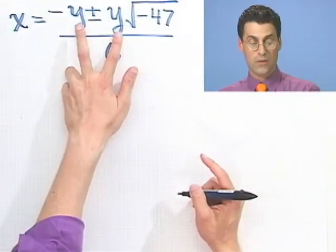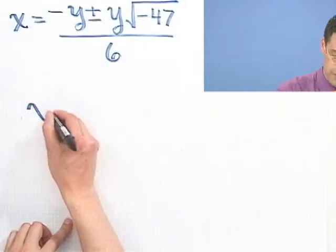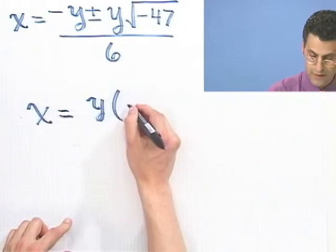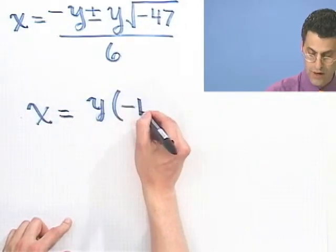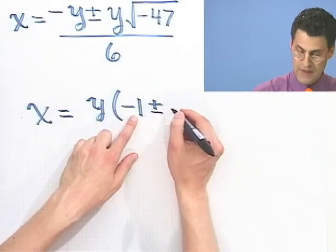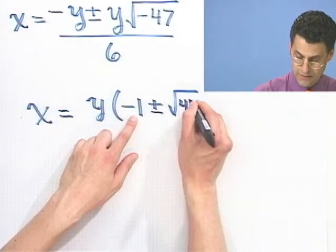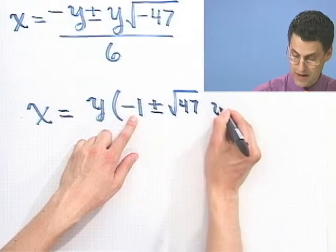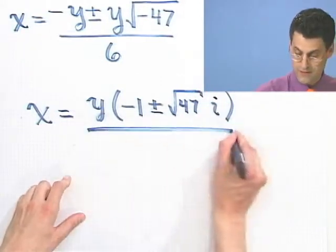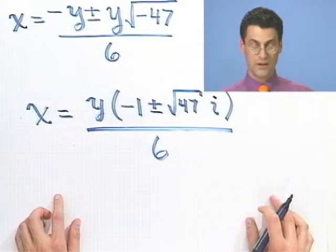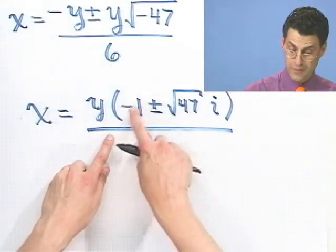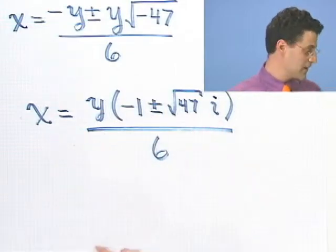I could factor out that y too. So I see y times (minus 1, plus or minus i√47), all over 6. Those are the two answers — one with the plus sign and one with the minus sign.